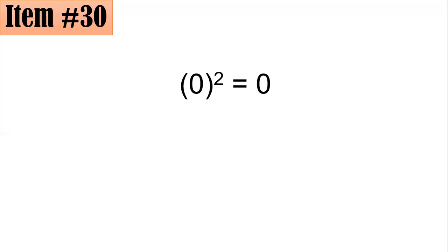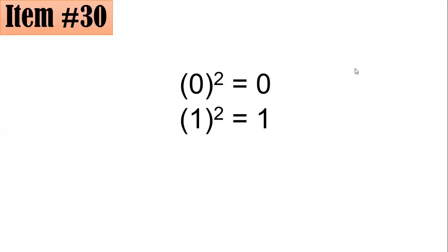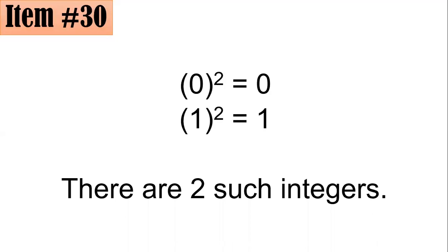So we have 0², which is 0. 1², which is 1. So you could see that 0² equals 0 and 1² equals 1. And I believe there's no more. Hence, there are only two such integers. Therefore, the correct answer is letter B.